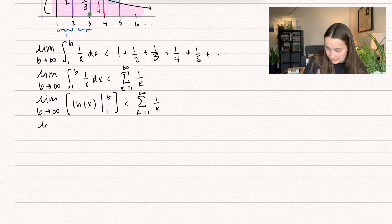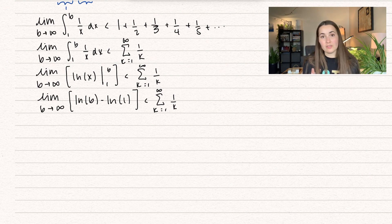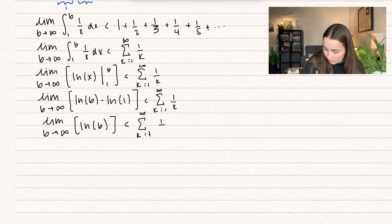So let's go ahead and plug in upper minus lower. Notice that the natural log of 1 is just 0, so this is just going to be the limit as b approaches infinity of the natural log of b, and this is less than the harmonic series, k equals 1 to infinity of 1 over k.